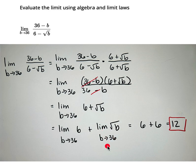So I have, as long as the limit exists for the square root of b as b approaches 36, I can take the limit of b and then take the square root. That's another one of our limit laws.